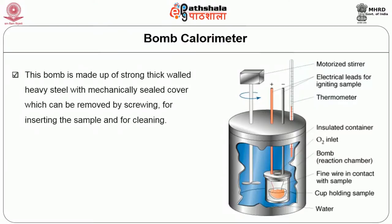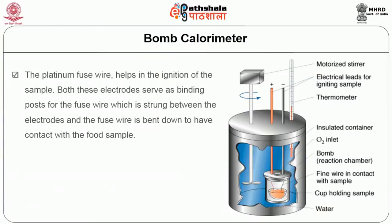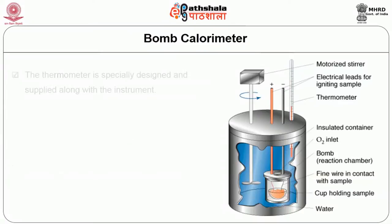The bomb is made of strong thick-walled heavy steel with a mechanically sealed cover which can be removed by screwing for inserting the sample and for cleaning. There are two electrodes attached to the underside of the double-walled head of the cover. The platinum fuse wire helps in ignition of the sample. Both electrodes serve as a binding force for the fuse wire, which is bent down to have contact with the sample. The stirrer is attached to the lid, along with the cup for holding the food sample to be analyzed. The thermometer is specially designed and supplied along with the instrument.